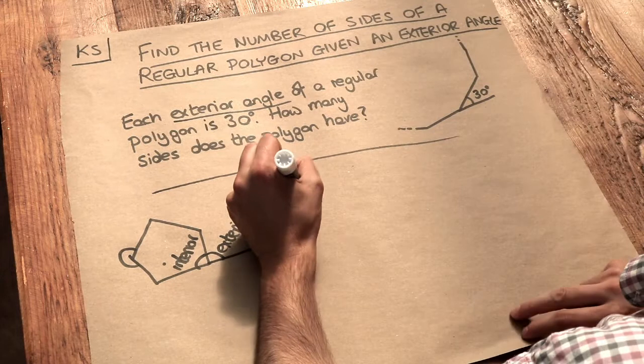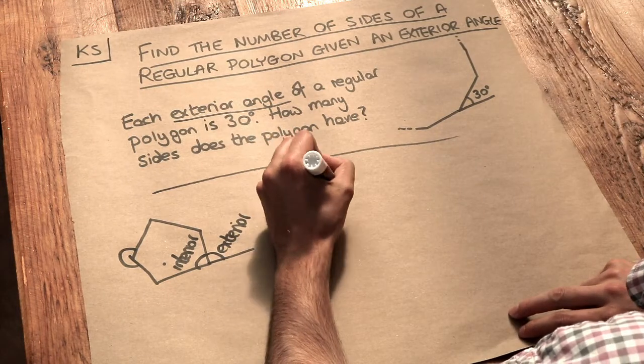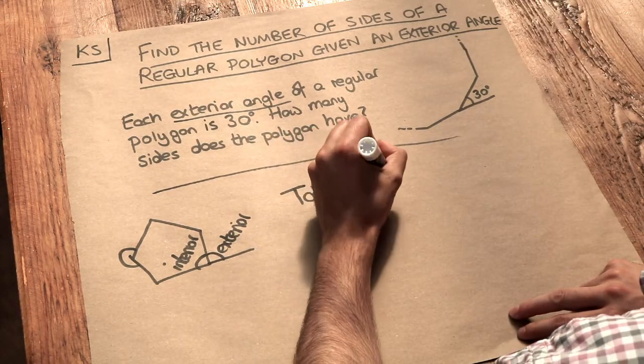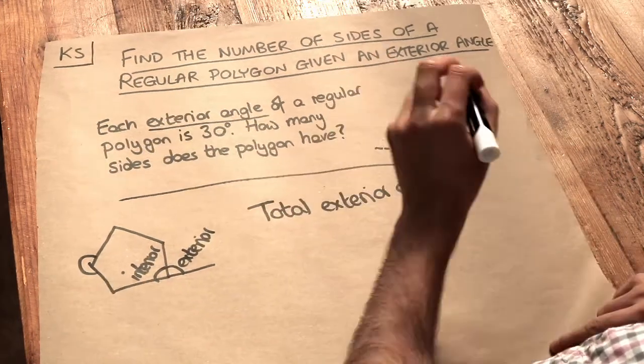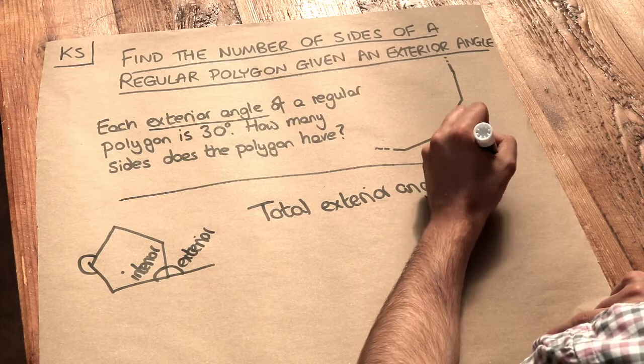And you remember that the key fact about exterior angles of polygons is that the total exterior angle of any polygon, whether regular or otherwise, is equal to 360 degrees.